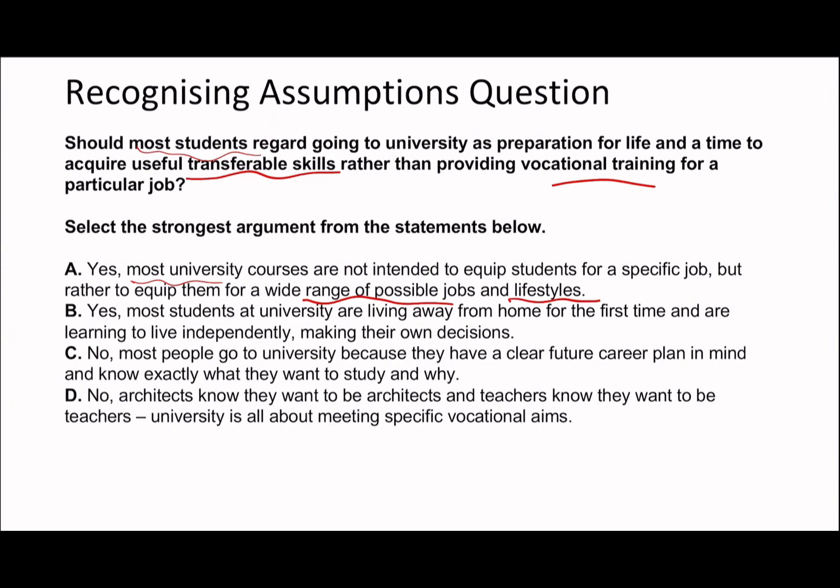Option B says most students are living away from home and may learn to live independently, making their own decisions. That may be true but it doesn't say anything about useful transferable skills. Option C says most people go to university because they have a clear future career plan and know exactly what they want to study and why — once again, it doesn't talk about transferable skills or the vocational training idea, so it's not C.